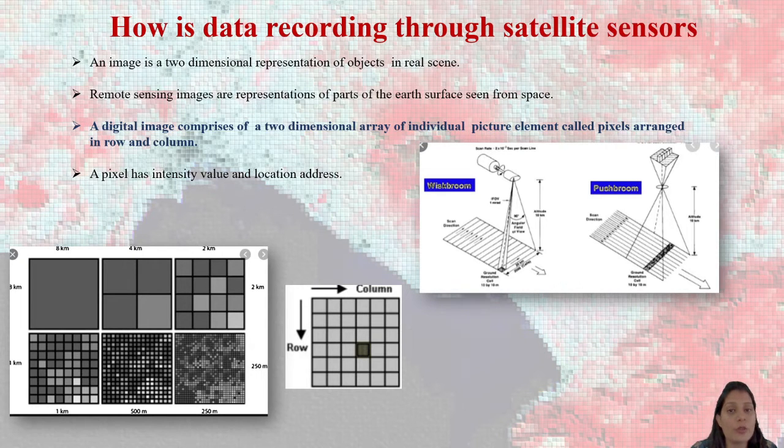Now, look at the image of push broom, you can see the image what I have shown, it is taking image in the vertical section. This is how it works. This is how it takes the image of the Earth's surface.